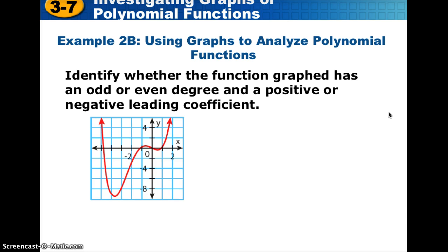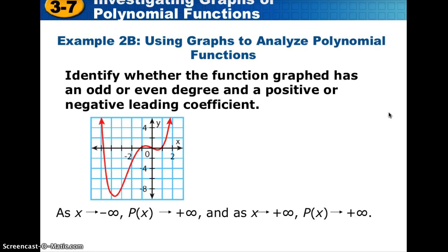In example 2b, both ends go in the same direction, so it's an even-degree function. On the right-hand side it's going positive, which means a positive leading coefficient. As x goes to negative infinity, p of x goes to positive infinity, and as x goes to positive infinity, p of x also goes to positive infinity.